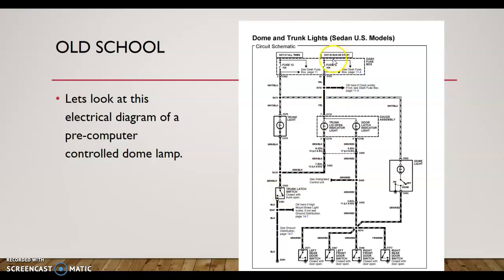Over here I have 'hot in run and start,' so this fuse gets power when the ignition is in run or start. 12 volts comes through here, 12 volts here, 12 volts here, all the way down through a splice. All of this is 12 volts until I close these switches, which I close them by opening the various doors. When any of these doors are open, the switch closes, grounding the circuit — that turns on this indicator light, but also the dome light will turn on if the switch is in the door position. So I have a double switch system, still switch-to-ground, but I diagnose it using Ohm's Law.